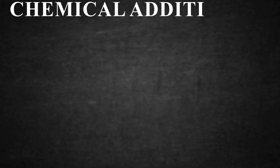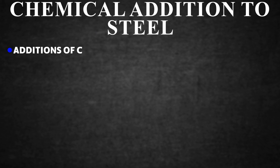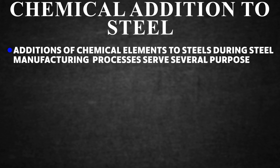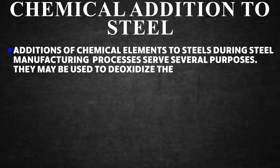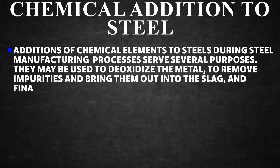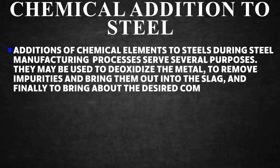Chemical Additions to Steel. Additions of chemical elements to steels during manufacturing serve several purposes: they may be used to deoxidize the metal, to remove impurities and bring them out into the slag, and finally to bring about the desired composition.